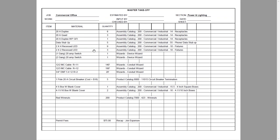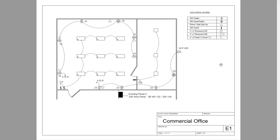Going back to the drawing to point out the data stub-up symbol — this is the symbol for the data stub-up, and over here we see the phone data stub-up designation. We have symbols for receptacles, symbols for quad receptacles, and all we did was count those and put the counts on the takeoff form.